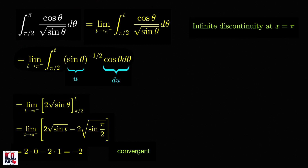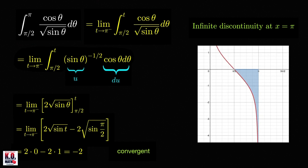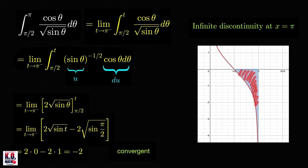How do we interpret this value geometrically? Looking at the graph of our integrand, the value negative 2 tells us that the area under the x-axis bounded by the function over the interval π/2 to π is equal to positive 2. This interpretation is consistent with our geometric interpretation of definite integrals.